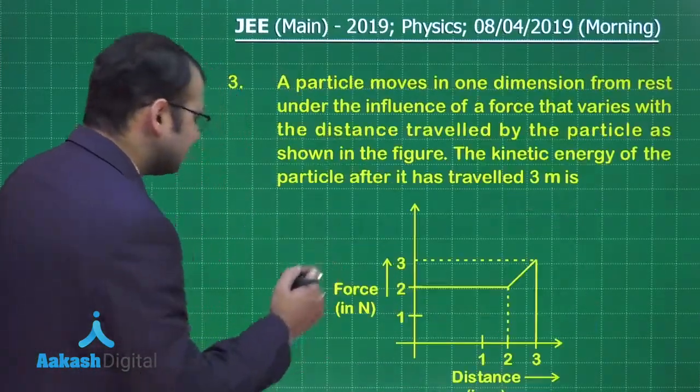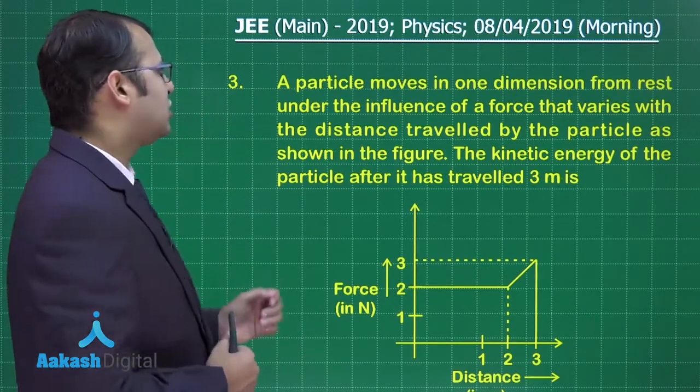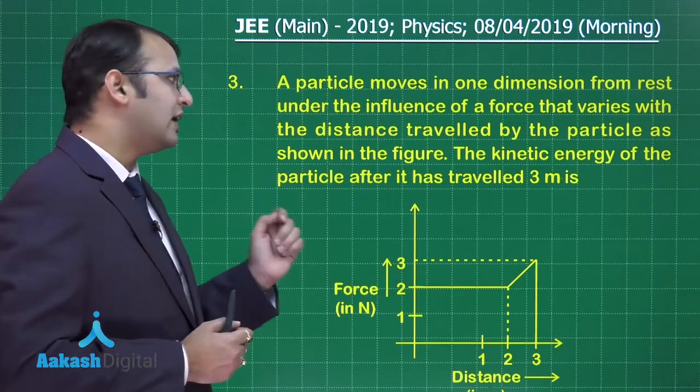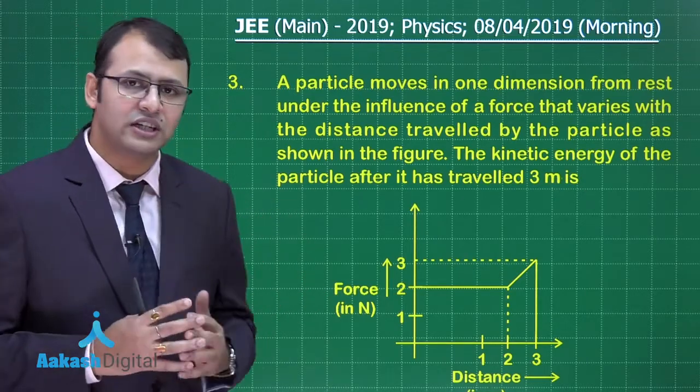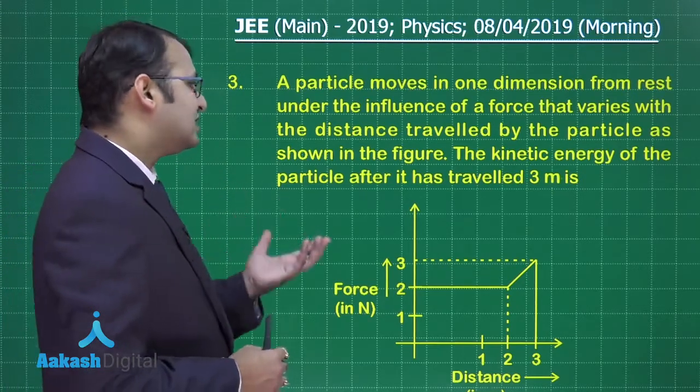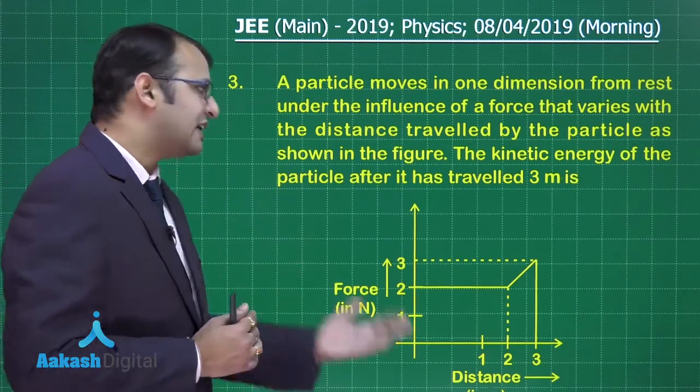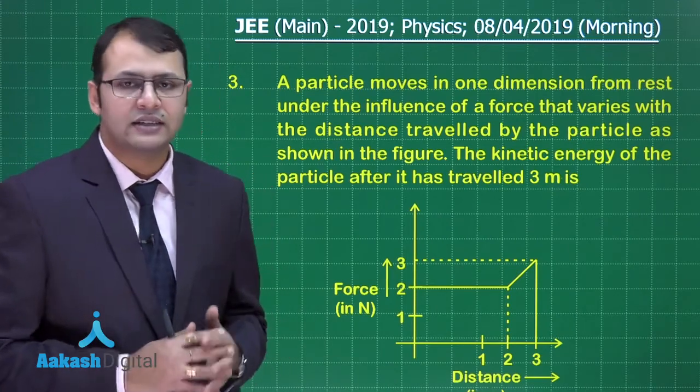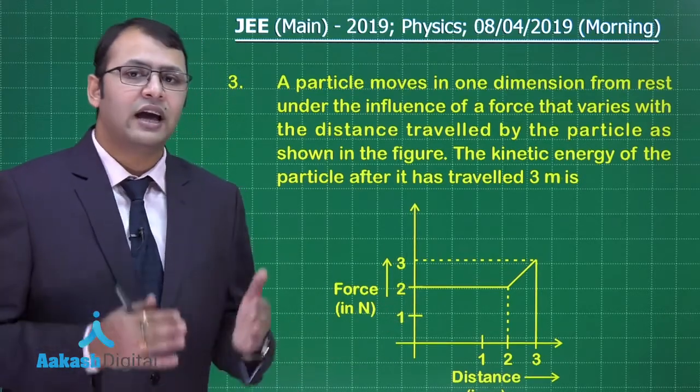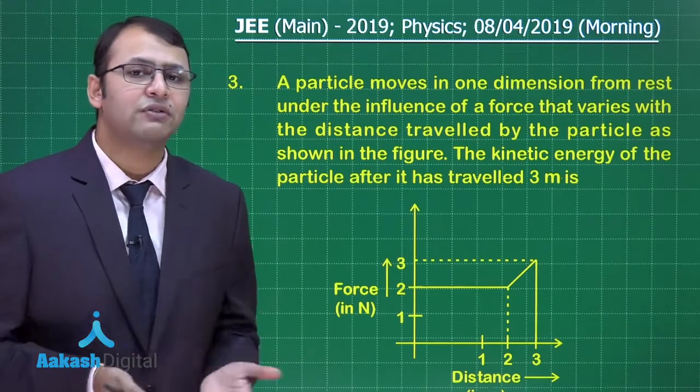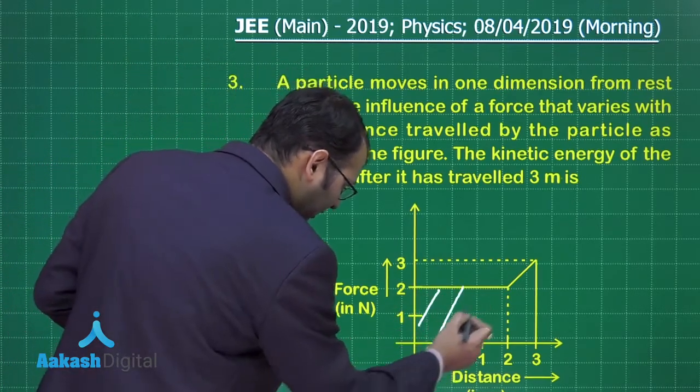Let's start with question number 3. This question belongs to section of mechanics, chapter work, power and energy. The particle moves in one dimension from rest under the influence of a force that varies with distance travelled. Force is not constant, it is a variable force. The distance travelled is shown in the figure and we have to find the kinetic energy of the particle after it has travelled 3 meters.